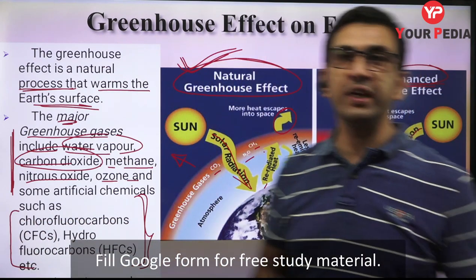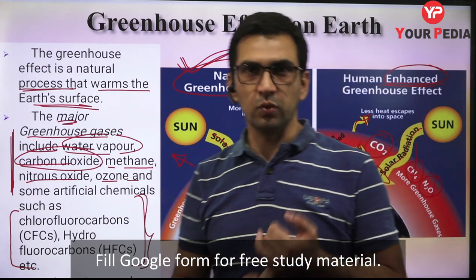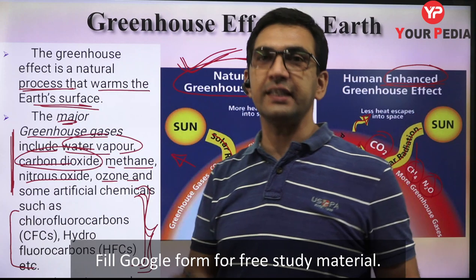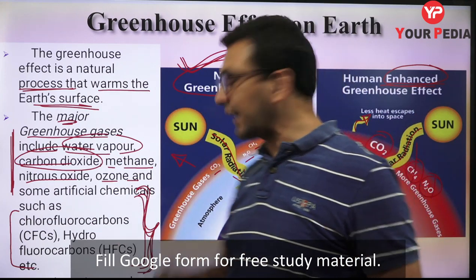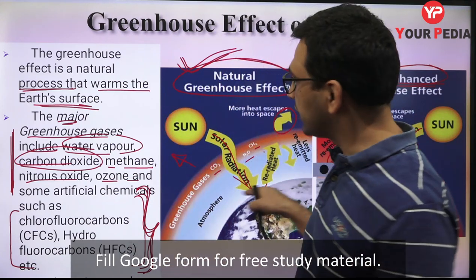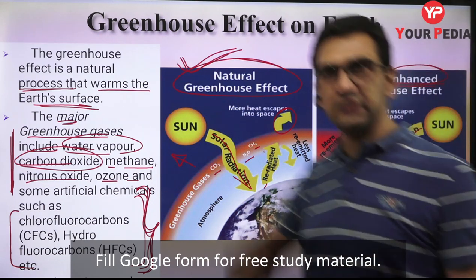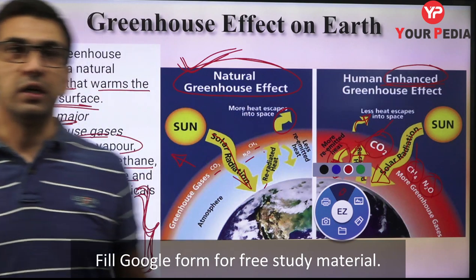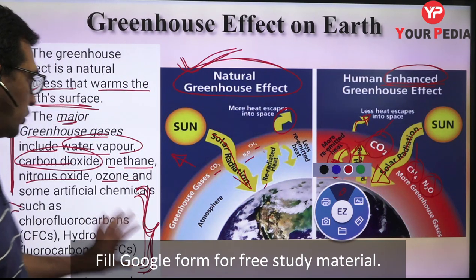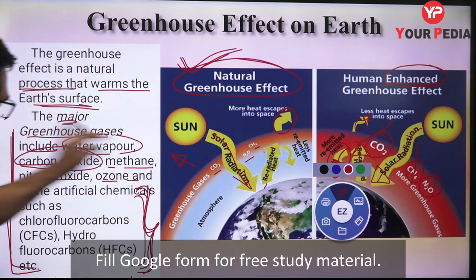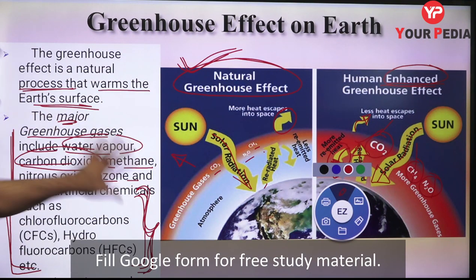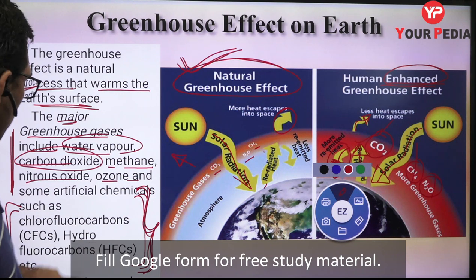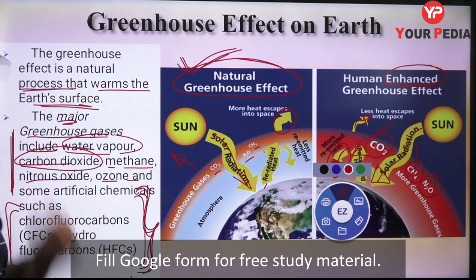CFCs, HCFCs, and HFCs are basically refrigerants used in refrigerators, ACs, and cooling towers. When these gases leak or go into the atmosphere, they behave as greenhouse gases. In addition to the naturally present gases whose quantities we have increased, we also produce artificial compounds that behave as greenhouse gases. From an exam point of view, be clear that some greenhouse gases are natural with increased release, and some are entirely artificial.